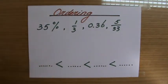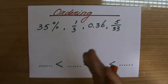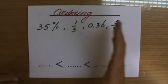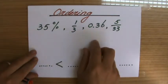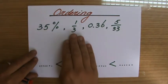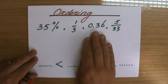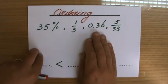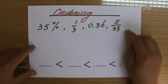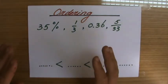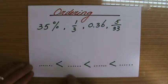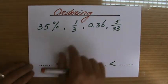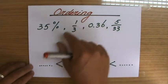Welcome back. In this example question, they're going to give you four numbers: 35 percent, 1 over 3, 0.36, and 5 over 33, and we have to order those numbers. They already give you a number line like this, so this one goes there.